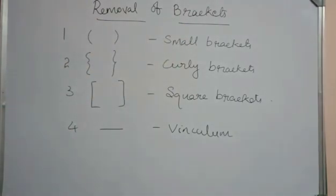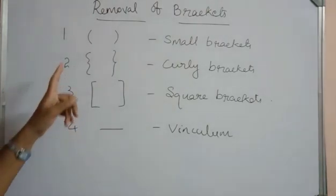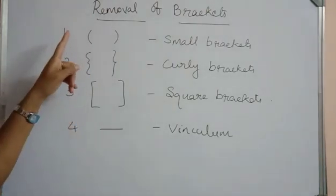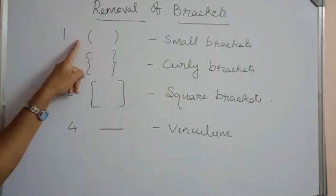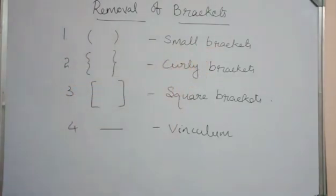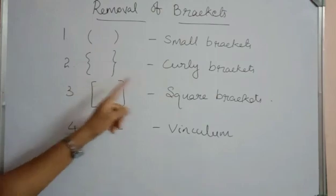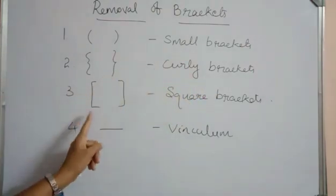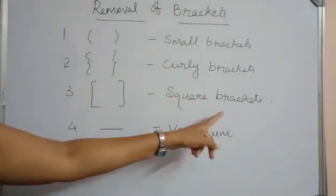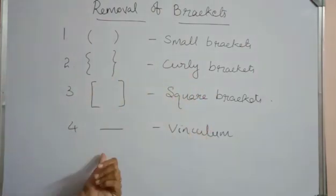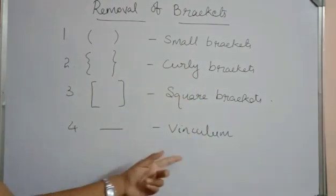In a complex expression, many types of brackets are used. The most commonly used brackets are: small brackets, also known as parenthesis; curly brackets; square brackets; and the last one is the vinculum.